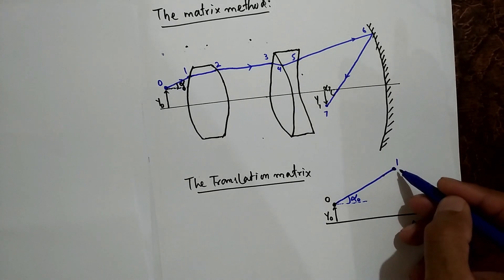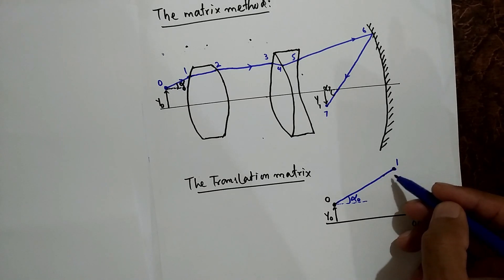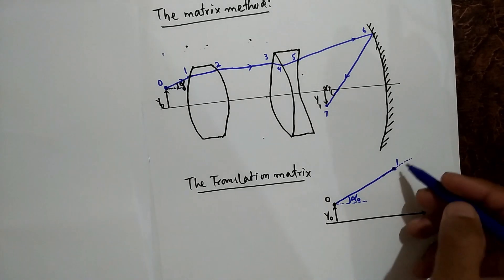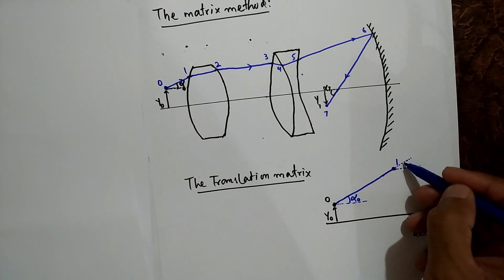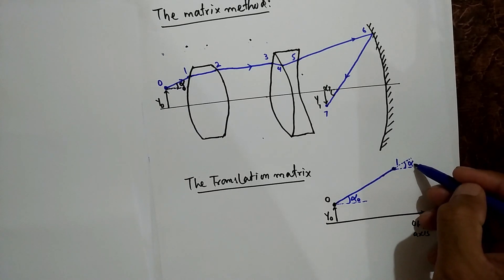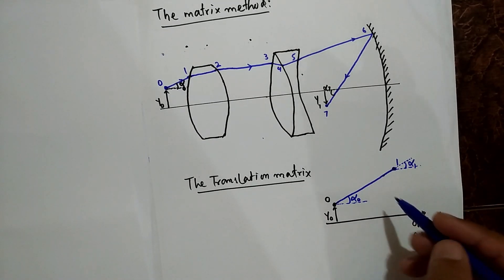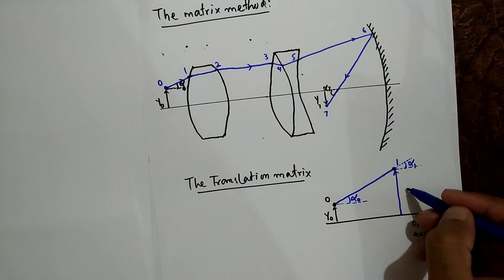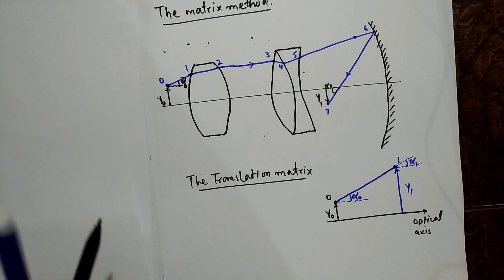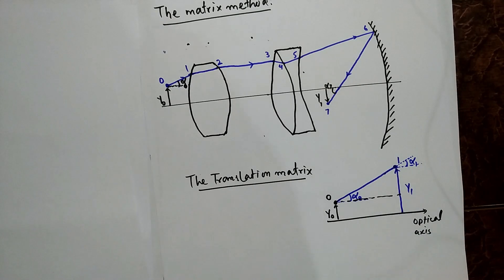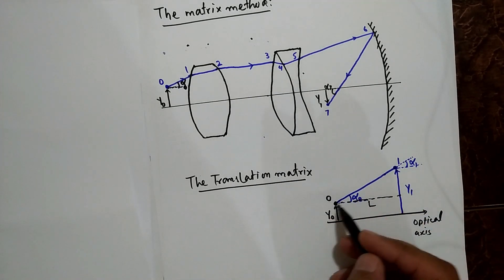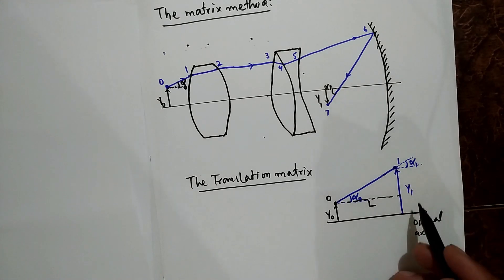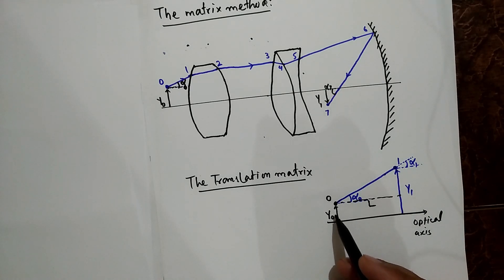We are going to find the angle of the ray with the optical axis and the height of the ray at point 1 from the optical axis. From the figure, the angle at point 1 is α₁ and the height is y₁. Let the distance covered along the optical axis by the ray be L.